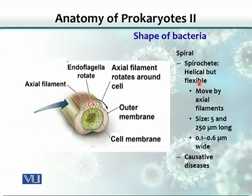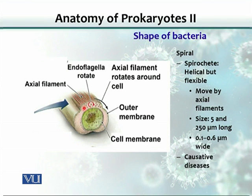These spirochetes are helical but flexible and move by axial filament. They are also large cells, measuring anywhere from 5 micrometers to 250 micrometers in length, and as wide as 0.6 micrometers. A cross-section of a spirochete body shows small structures called endoflagella. When the endoflagella rotate, the spirochetes move from one place to another.